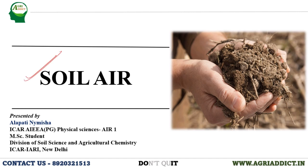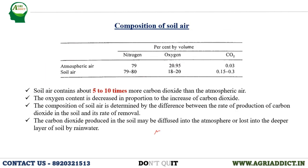Coming to the composition of soil air — if we compare soil air and atmospheric air, the nitrogen content of both is almost the same, that is 79%. If we see oxygen content, it is more in atmospheric air in general, and in soil air it usually fluctuates. In soil, the pores contain both air and water.